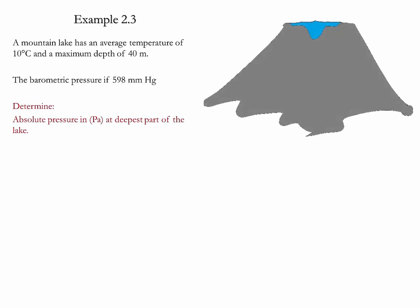Example 2.3. In this example we have a mountain lake which has an average temperature of 10 Celsius and has a maximum depth of 40 meters.